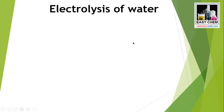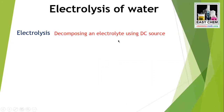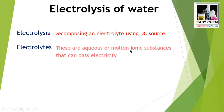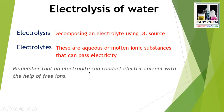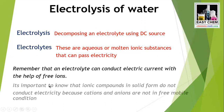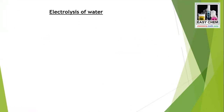Before we discuss electrolysis of water, there are a few things you need to remember. Electrolysis is decomposing an electrolyte using a DC source. An electrolyte is a substance in aqueous or molten form that is ionic and able to pass electricity. An electrolyte conducts electric current with the help of free ions — it is always ionic compounds that can pass electricity, but not in solid form, because in solid form ions are not free.